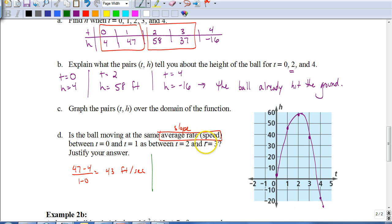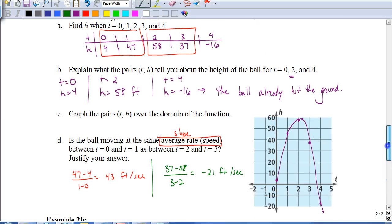For the second part, between 2 and 3 seconds, I would take 58. I could do 37 minus 58 over 2, 3 minus 2. Which in this case would give me negative 21 feet per second. Having a negative speed is possible. It just means that instead of speeding up, or the first one was speeding up, going 43 feet per second, going between 2 and 3 seconds, it's slowing down now at 21 feet per second. Or another way to look at it is it's dropping. It would be a better way to phrase it. It's dropping at a rate of 21 feet per second. We're here from 1 to 2 seconds. It was increasing. It was going up at a rate of 43 feet per second.